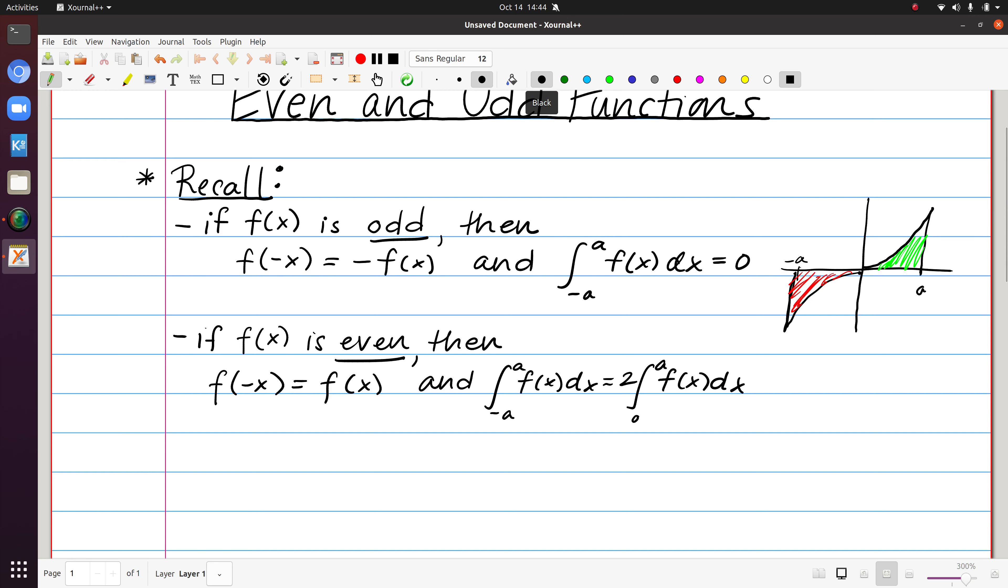If f of x is even, then instead we see a different kind of symmetry, and we say that f of minus x equals f of x. So again, if this is my function from 0 to a, it would look like this from minus a to 0. Symmetry across the y-axis.